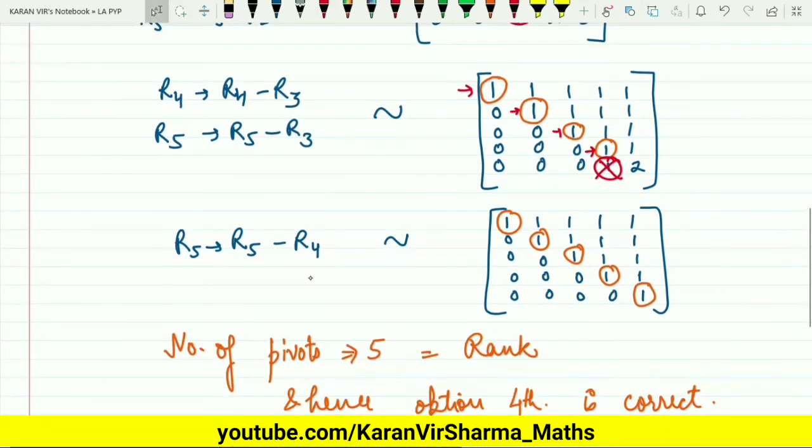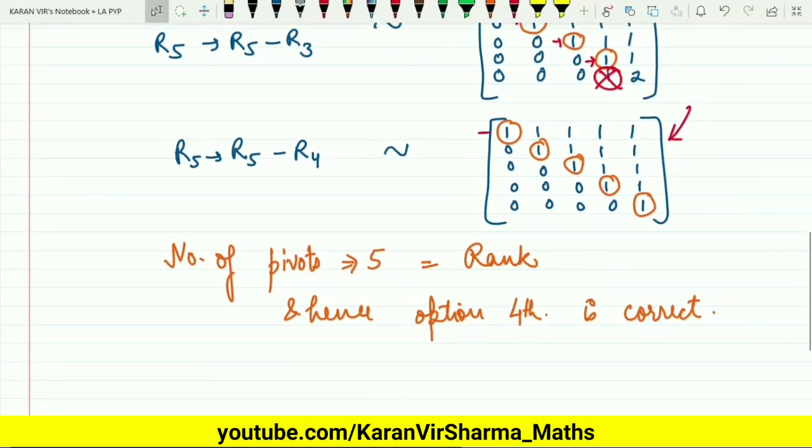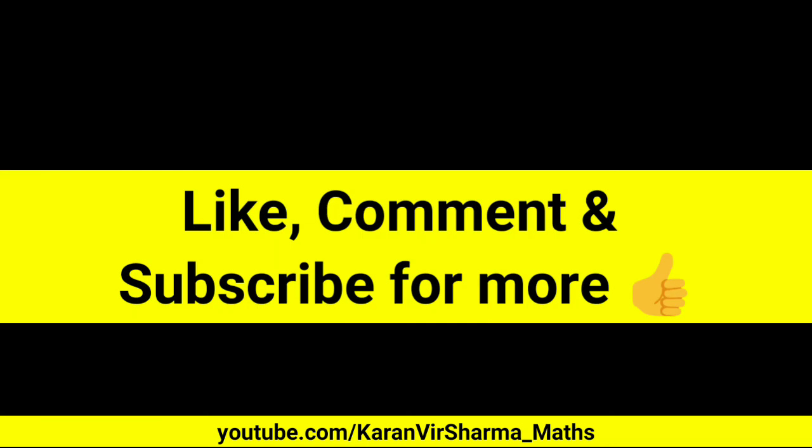You will be getting this matrix. Now calculate the number of pivots. This is the first pivot, this is second pivot, this is third pivot, this is fourth, and this is five. So the number of pivots is equal to five, which is the rank of the matrix, and hence the fourth option is correct.